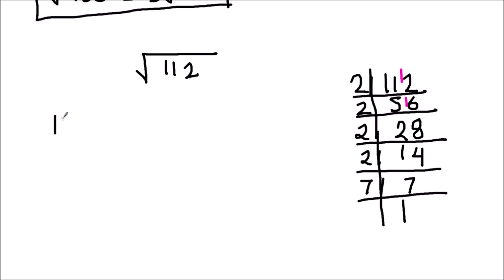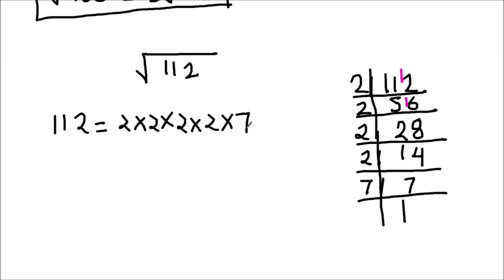So the factors of 112 are 2 times 2 times 2 times 2 times 7. To find the square root, we are going to take the square root on both sides.